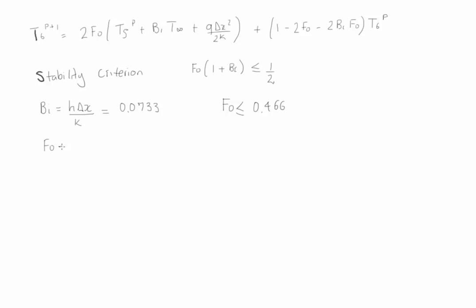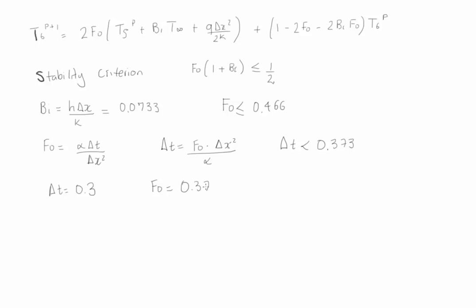The Fourier number is defined as alpha times Δt divided by Δx squared. We are looking for the ideal time step Δt to use in our code. The maximum allowable Δt is limited by the Fourier number constraint, Δx, and alpha, and must be less than 0.373 seconds. Therefore, we select Δt equal to 0.3 seconds, which gives a Fourier number of 0.375.